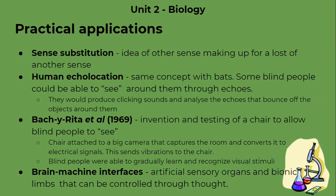Another example is Bach-y-Rita et al., 1969, which involved an invention and the testing of it. This was a chair designed to allow blind people to see. The chair was attached to a large camera that captures the room and converts it into electrical signals, which then send vibrations to the chair. Blind people were able to gradually learn and recognize visual stimuli through the vibrations in the chair. Both of these are examples of neuroplasticity applications for blind people.